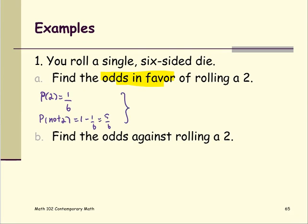So then we put in the odds in favor of rolling a 2 would be 1 over 6 divided by 5 over 6, which is 1 over 5, but written in the form of the ratio would be 1 to 5.